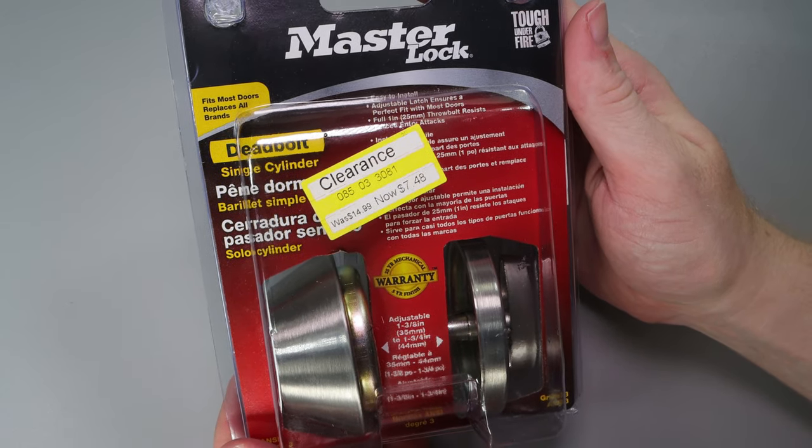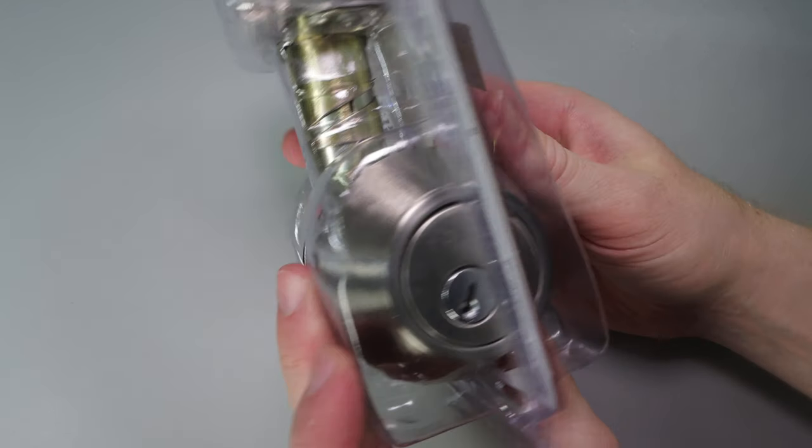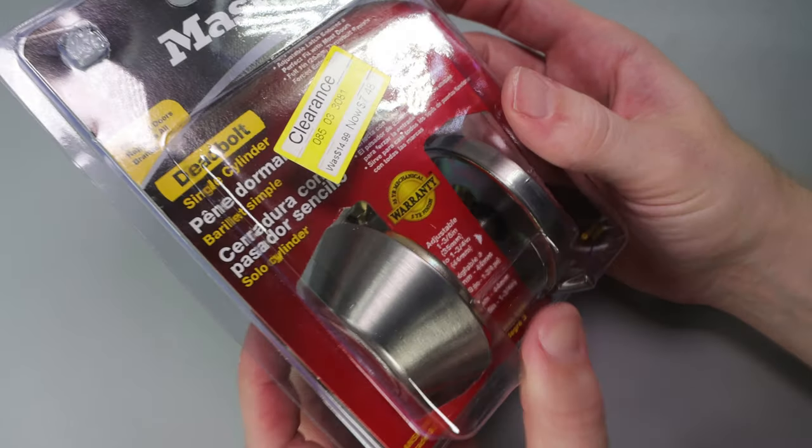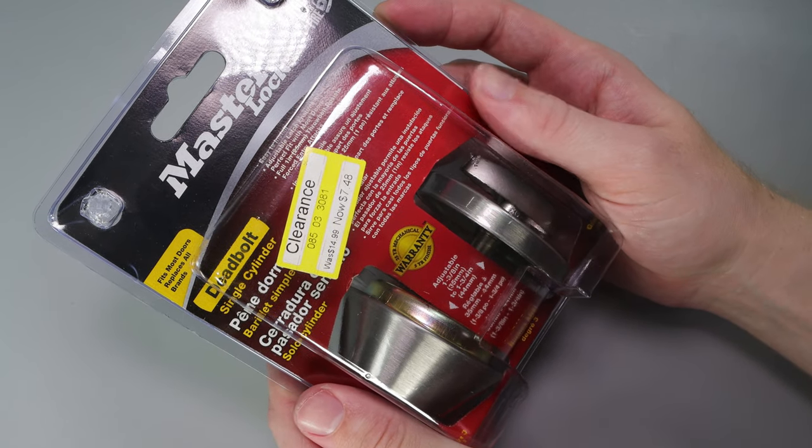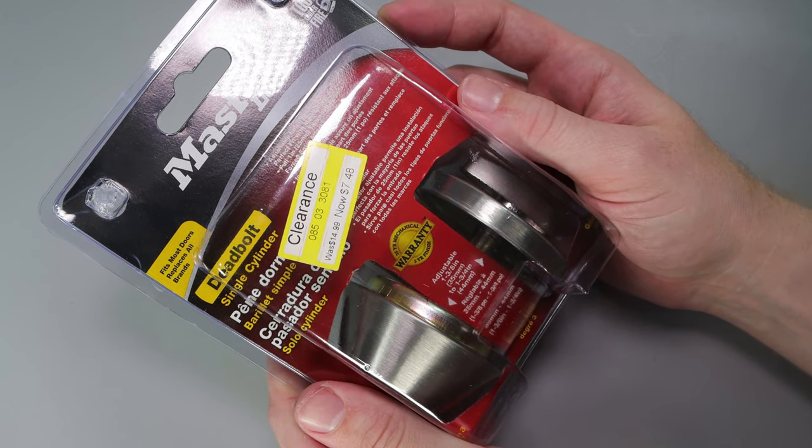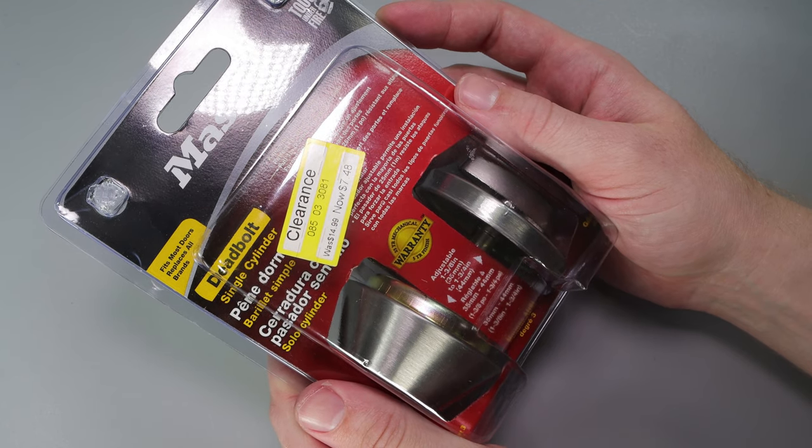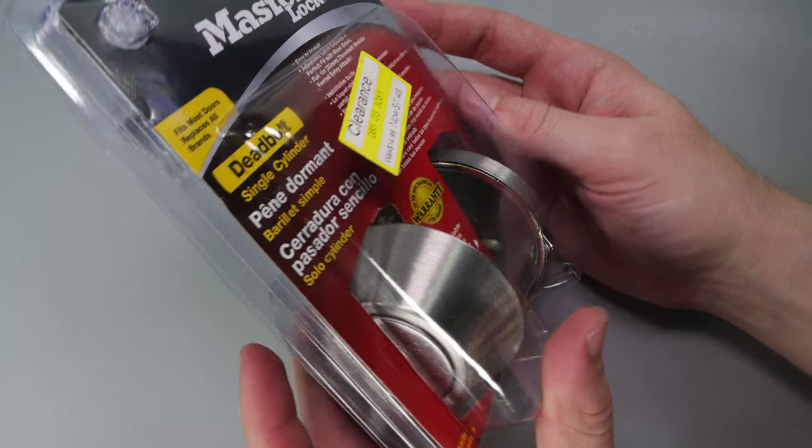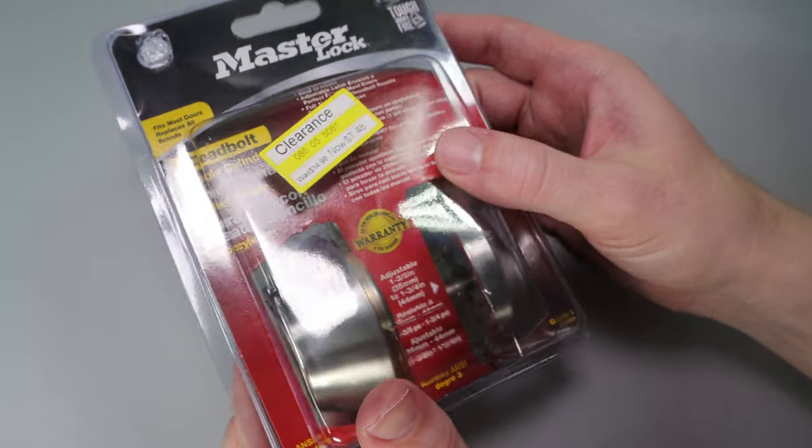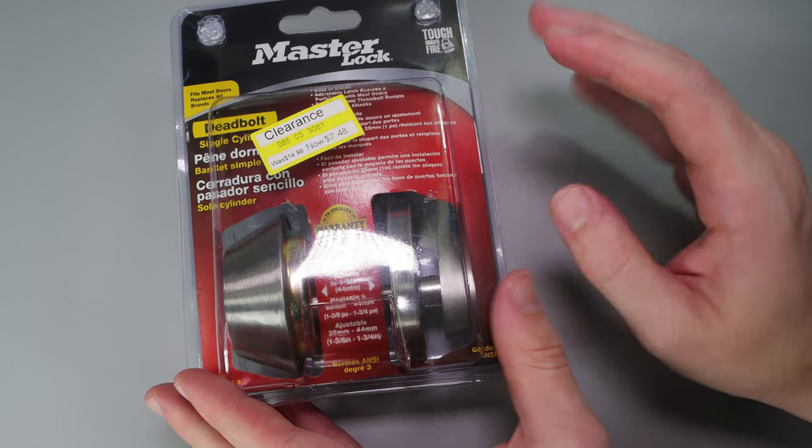I have a Master Lock Deadbolt with a Kwikset KW1 keyway. I just find this entire thing to be ironic because Master Lock is typically more of a padlock format and not having a Kwikset KW1 keyway. And both of these locks have their own track record for their ability to be picked into.